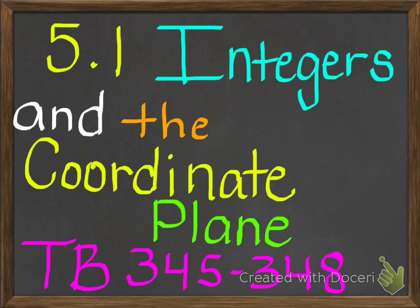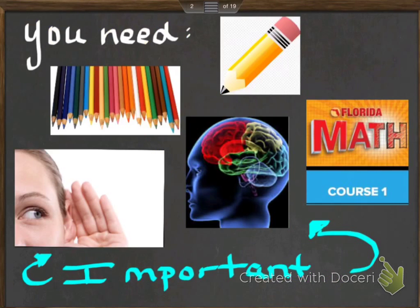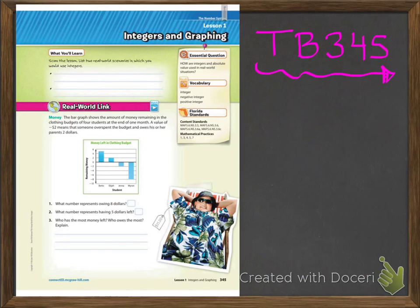Hi and welcome to chapter 5, section 1. This is going to start on textbook page 345 and go through textbook page 348. As usual, you should have your colored pencils, your regular pencil, your math book, your brain, and your ears.